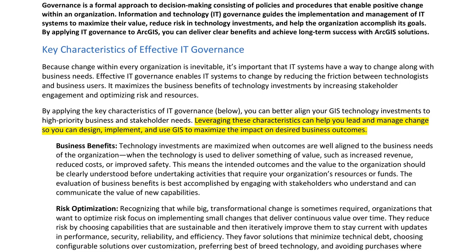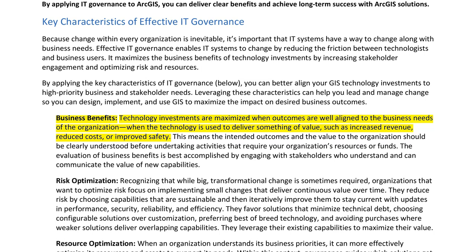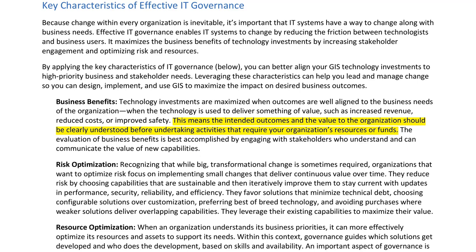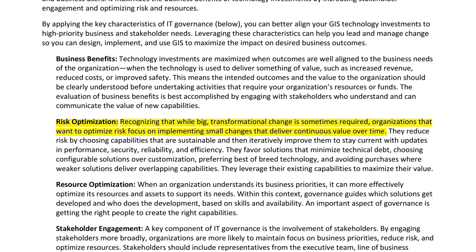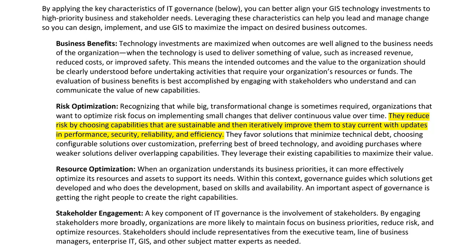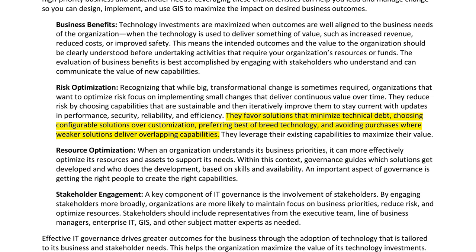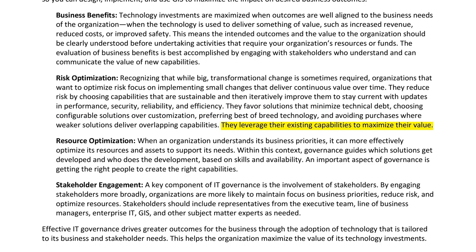Key characteristics of effective IT governance include: Business benefits — technology investments are maximized when outcomes are well aligned to business needs, such as increased revenue, reduced costs, or improved safety. Risk optimization — organizations that want to optimize risk focus on implementing small changes that deliver continuous value, choosing capabilities that are sustainable and iteratively improving them. They favor solutions that minimize technical debt, choosing configurable solutions over customization and preferring best-of-breed technology. Resource optimization — when an organization understands its business priorities, it can more effectively optimize resources to support its needs. Governance guides which solutions get developed and who does the development based on skills and availability.